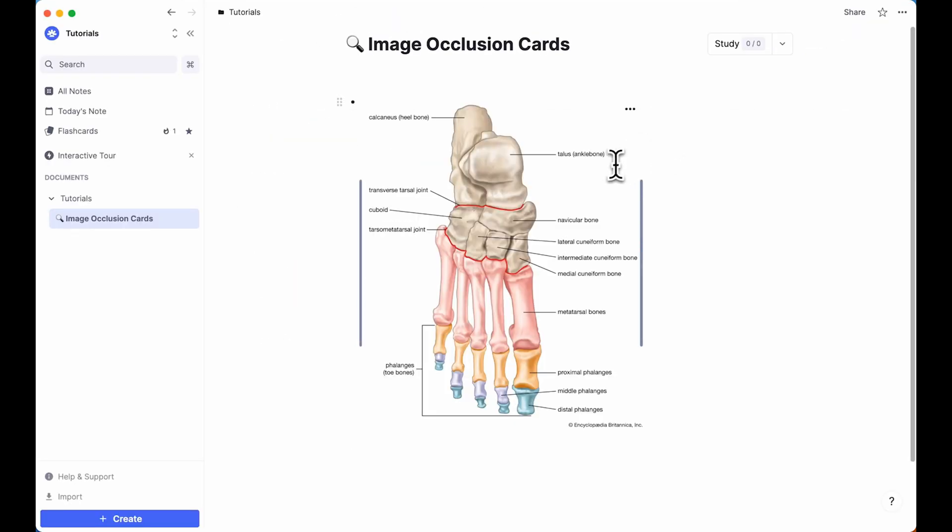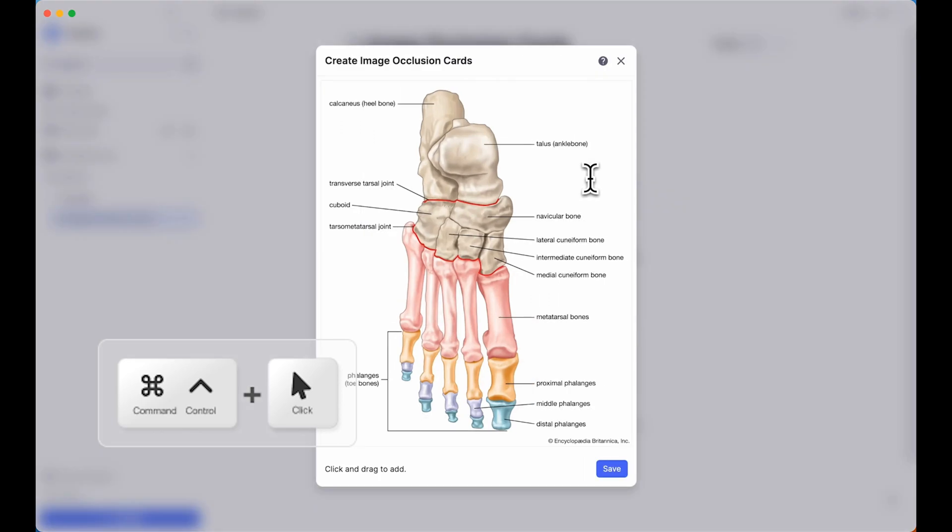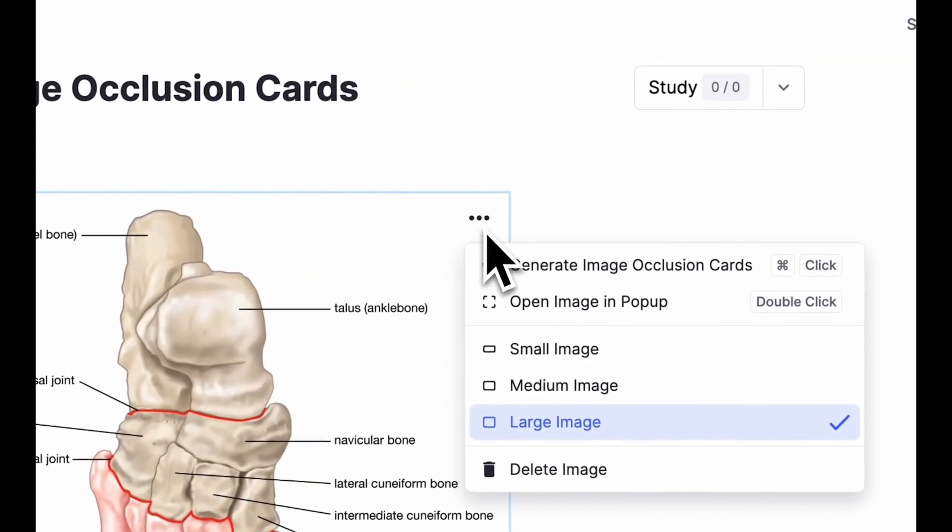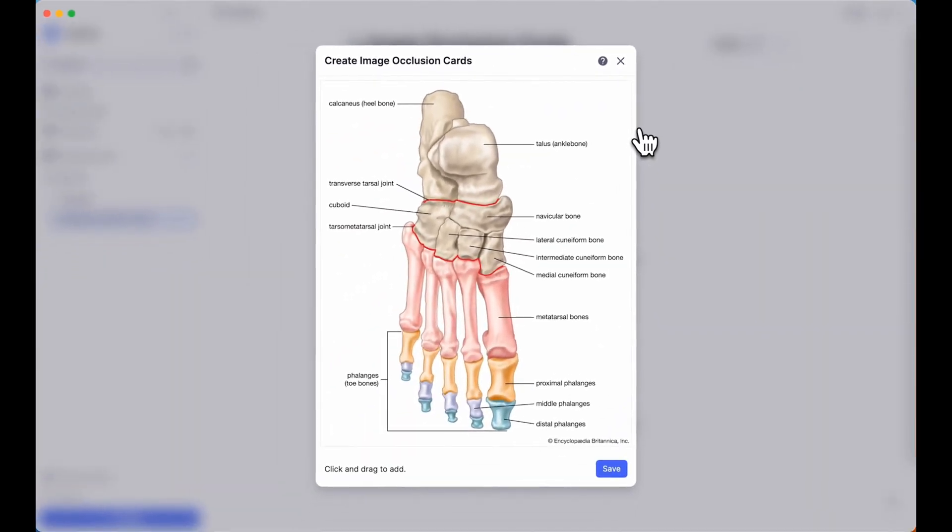Once your image is uploaded, hit CMD or CTRL and click the image, or click the three dots that appear in the top corner when you hover over it. Choose Generate Image Occlusion Cards to open up the editor.